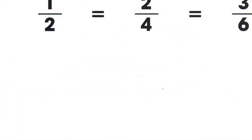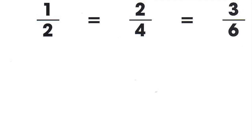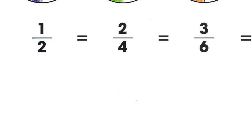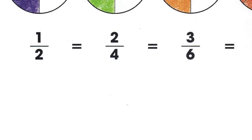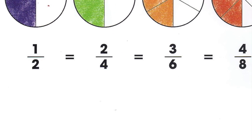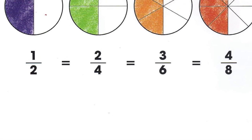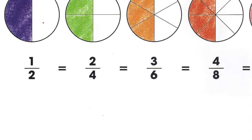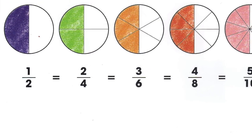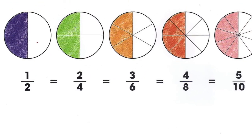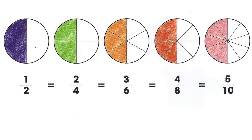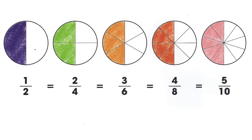Three twelfths and one fourth are equivalent fractions. Equivalent fractions are different fractions that show the same amount. Notice that one half is the same as two fourths, which is the same as three sixths, which is the same as four eighths, which is also the same as five tenths. Each of these different fractions shows the same amount, which is why they are equivalent fractions.